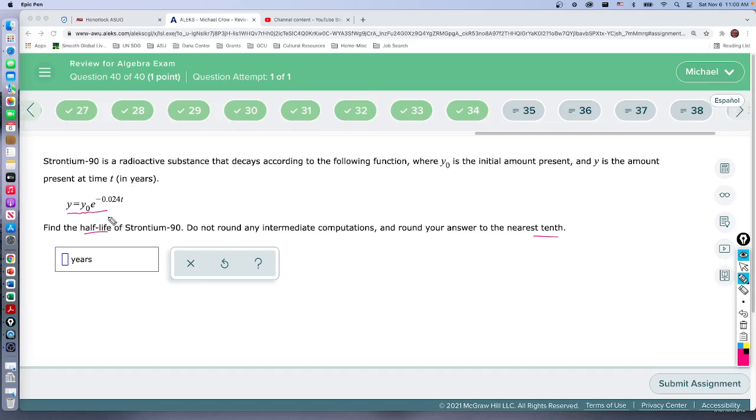Here's our equation. Strontium-90 is a radioactive substance that decays according to the following function, where y₀ is the initial amount present and y is the amount present at time t. So we want half-life. We don't know what the beginning value is, but what we do know is the relationship: whatever we started with, we only have half of it left after some time has passed.